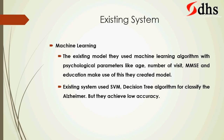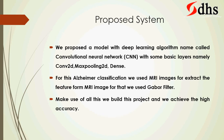In the existing system, they use numerical data such as the person's age, number of visits, MMSE score, education level, and similar metrics. Based on those values, they predict whether the patient has Alzheimer's or not. For that, they use machine learning algorithms named SVM and Decision Tree to classify Alzheimer's.